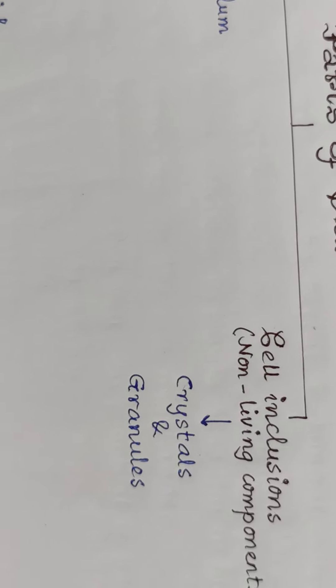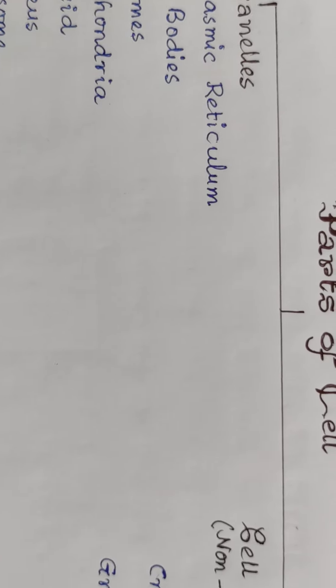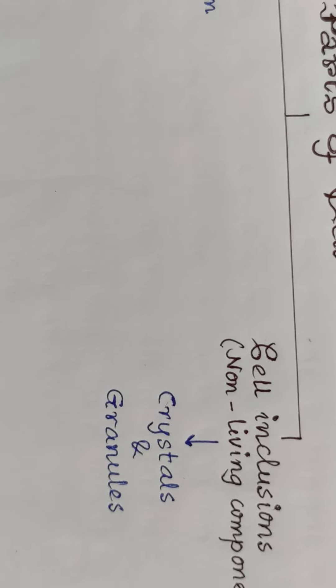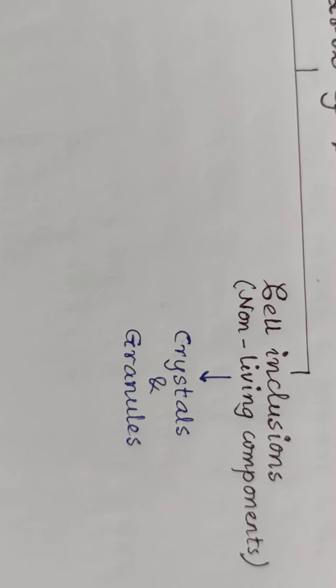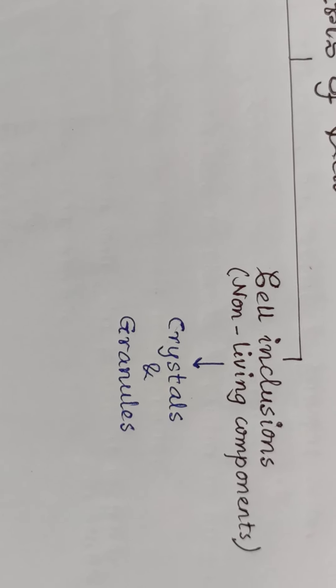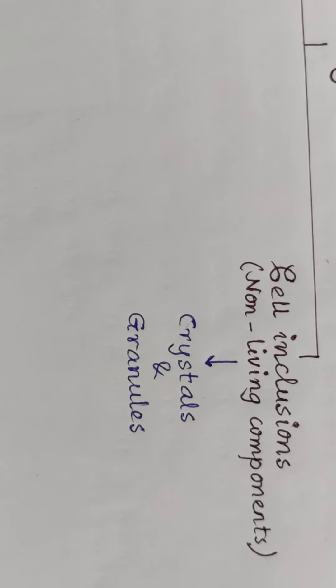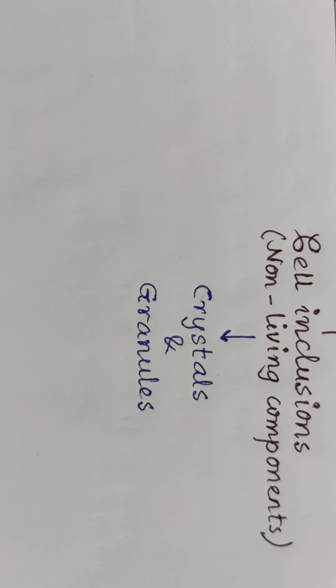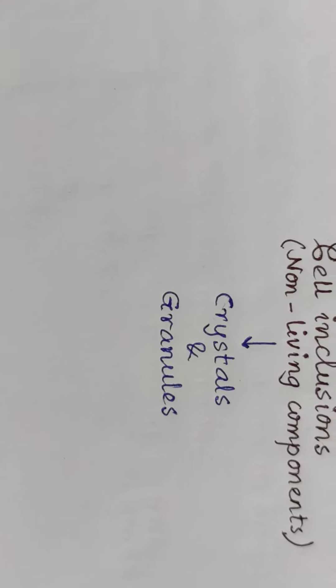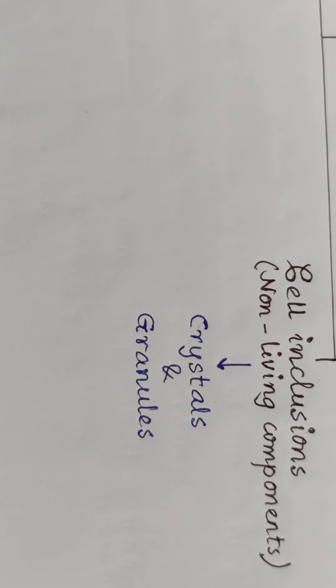One of them are called organelles, which have got specific functions in a cell. Another are called cell inclusions, which are basically non-living components of the cell. They are mostly crystals or granules of starch, food vacuoles, and many other things like that.